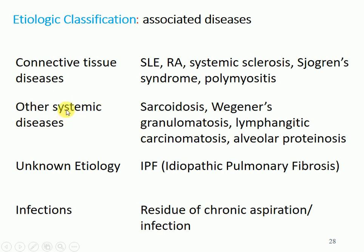There are also other systemic diseases — diseases that affect many parts of the body — such as sarcoidosis, Wegener's granulomatosis, lymphangitic carcinomatosis, and alveolar proteinosis. These are also likely to be associated with damage to the interstitial parts of the lungs.